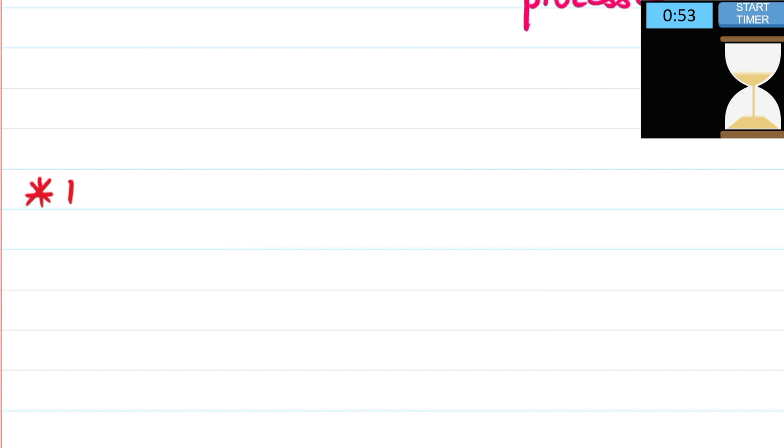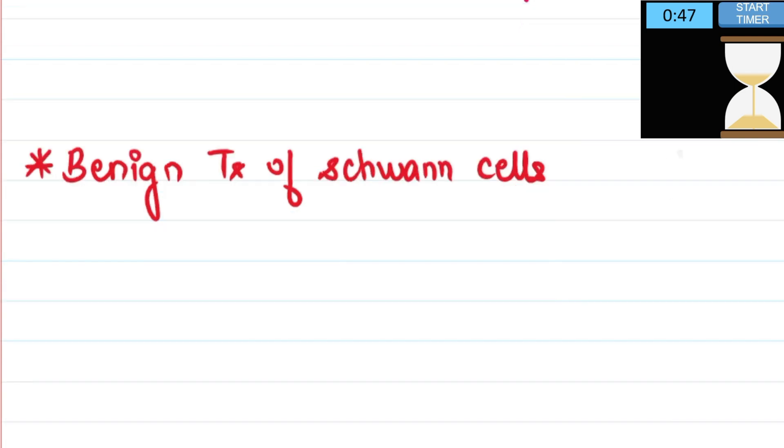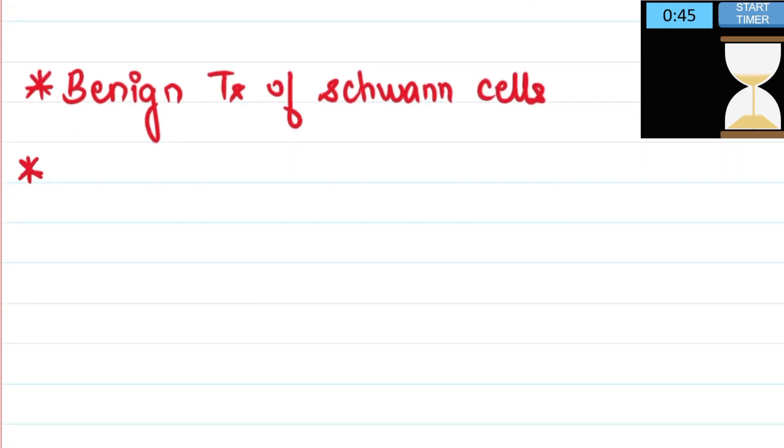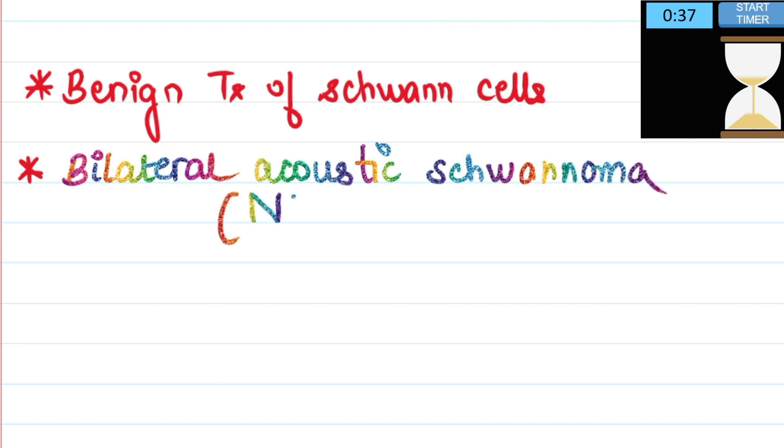Next you need to know certain important points. This is a benign tumor of the Schwann cells. It is associated with a very important syndrome that is bilateral acoustic schwannoma. Please note this is the same that is also known as NF2. So acoustic means it involves the eighth cranial nerve and bilateral obviously means both sides.